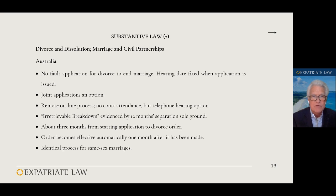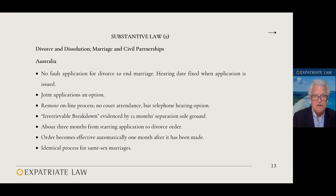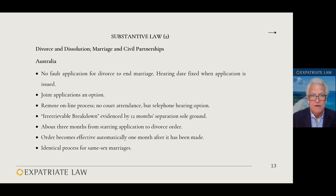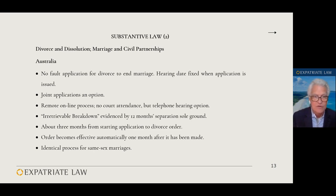Next, there are differences between divorce and dissolution. Divorce in Australia applies to marriages; there is no dissolution — which is an English term dealing with civil partnerships. In Australia, we have no-fault divorce. The hearing date is fixed when you issue your application, normally two to three months ahead. You can do a joint application; it's a remote online process with no court attendance, though a telephone hearing can take place if there is a disputed issue or if there are children involved. Irretrievable breakdown is evidenced by 12 months of separation — the sole ground. Unless you are separated for 12 months, you cannot even start a divorce in Australia. It takes about three months from start to finish, and then the order becomes automatically effective one month later. Identical process for same-sex marriages.